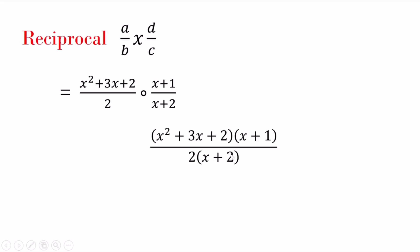I'm just rewriting. I've done nothing until this point. So it becomes x squared plus 3x plus 2 times x plus 1. On the bottom, it becomes 2 times x plus 2. This is what you can see on the bottom here. Using reciprocal method, it becomes on the bottom, and that's what I was saying from the beginning.